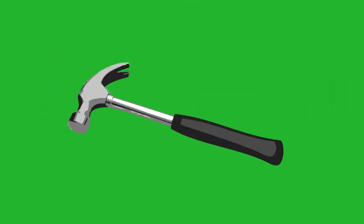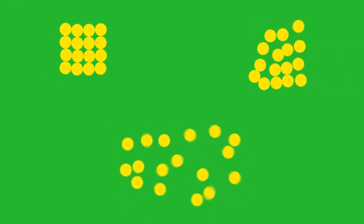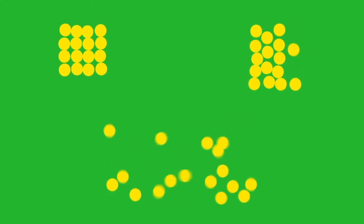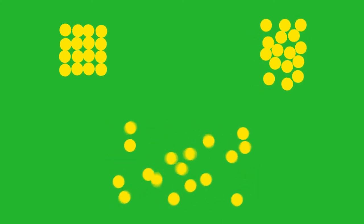Everything is made up of particles. Imagine particles as small balls, like this. These particles are constantly moving. The particles in solids, liquids and gases are all arranged and behave in different ways. So the properties of solids, liquids and gases depend on how these particles behave and are arranged. Let's have a look at these different ways.